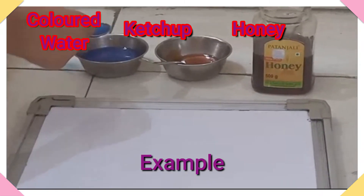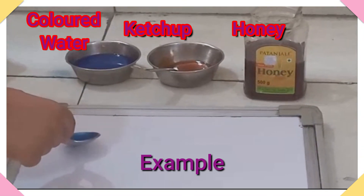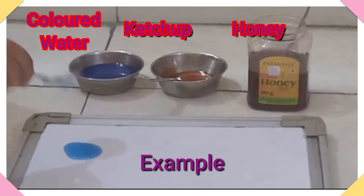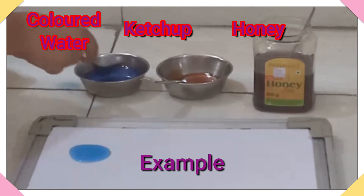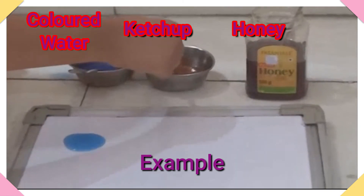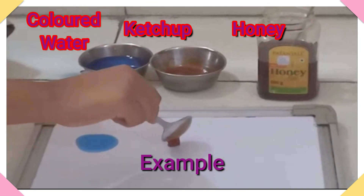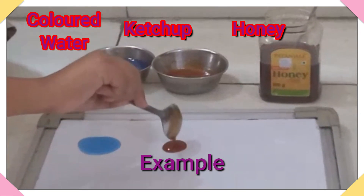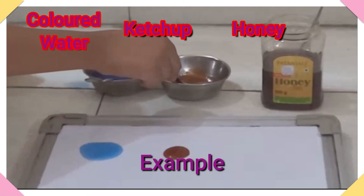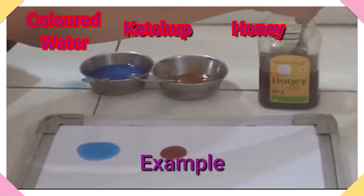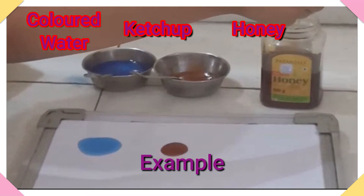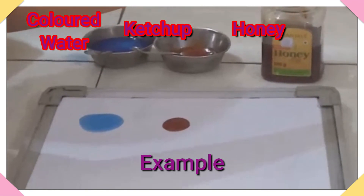Let us understand this with an example. Here we are taking different liquids and we check the rate of flow — water, tomato ketchup, and honey. Let us drop one spoon of each liquid and find which can flow faster.